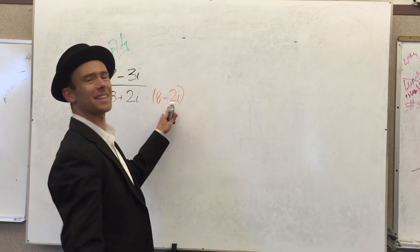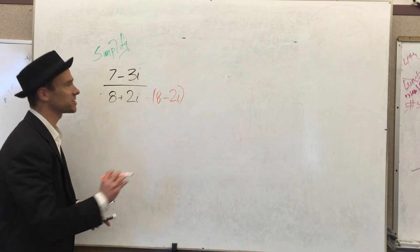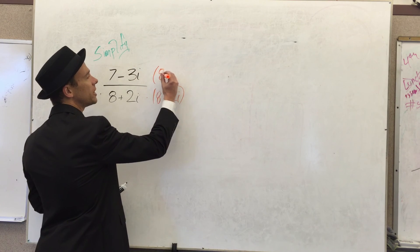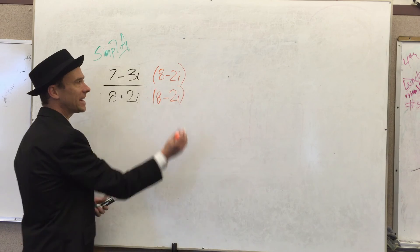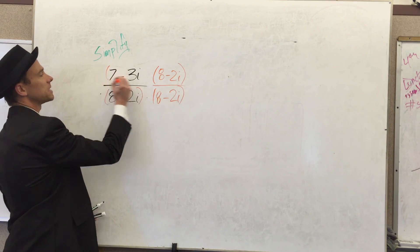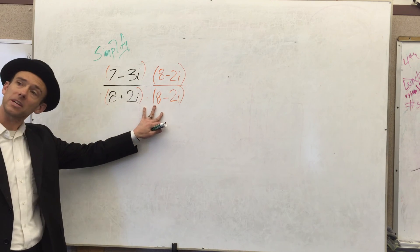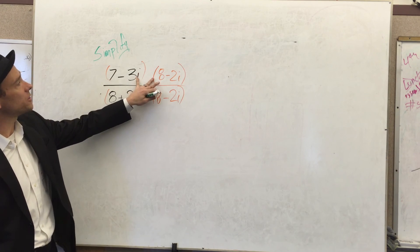Now this is a fraction, people, and you cannot go and multiply the denominator of a fraction without also multiplying that numerator. So let's go get it. So now we kind of want to think about these as being in parentheses. We're going to multiply the denominator by its complex conjugate and also multiply the numerator by the denominator's complex conjugate.